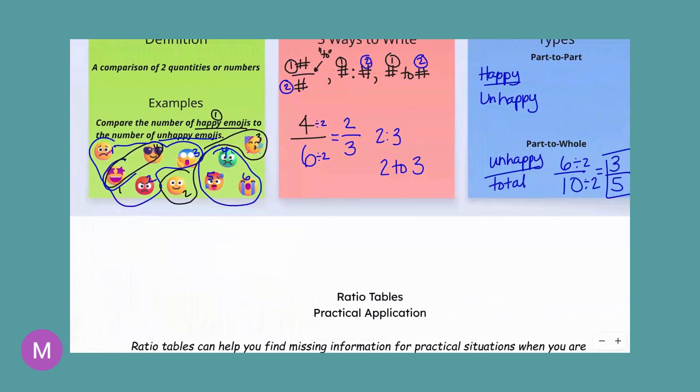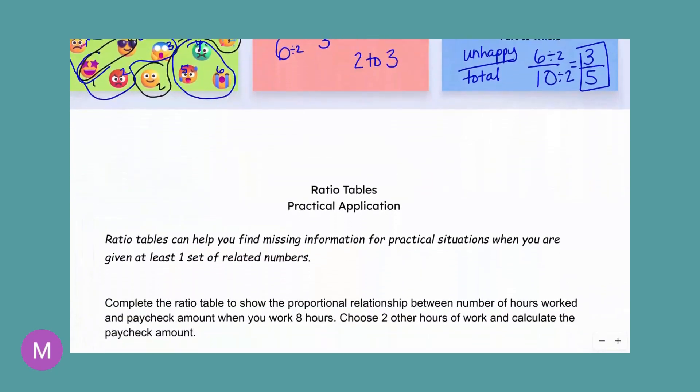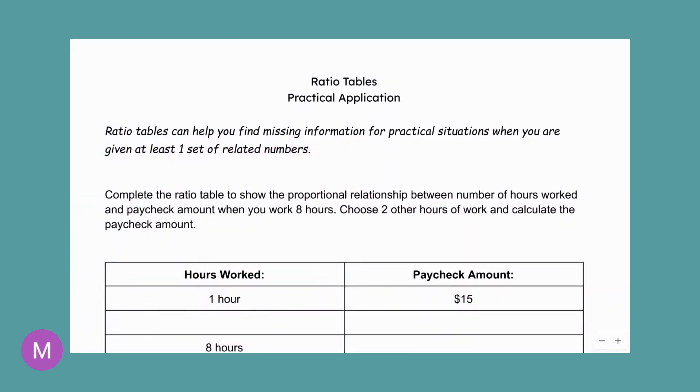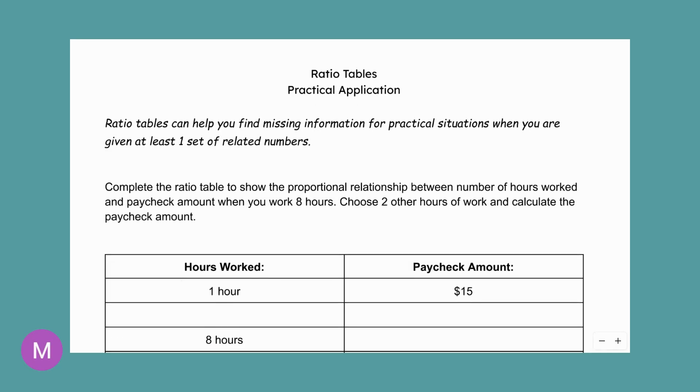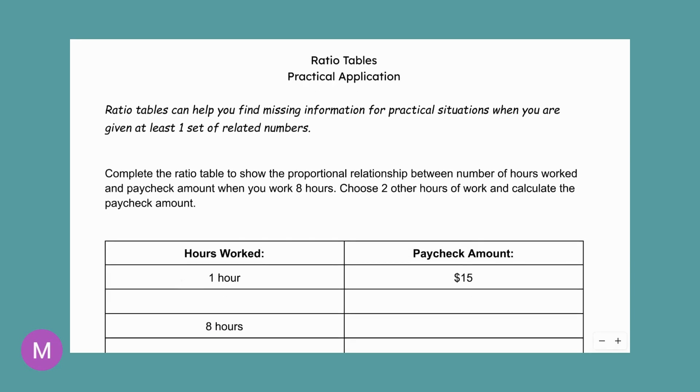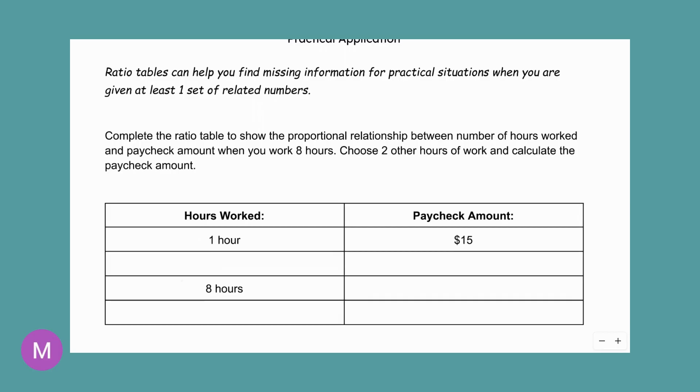And then we're going to come over here and you guys have this worksheet in your packet. So go ahead and take a second to pull it out. Pause if you need to. And we're going to complete this together. So ratio tables are a nice tool to help us create equivalent ratios whenever we need to know more than just one thing. Like that example we just did, we needed to go from 10 to 50. And that was just one thing we needed to do, but tables can help you see multiple equivalent ratios.